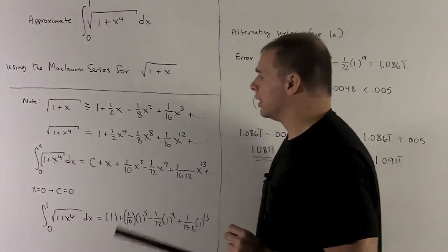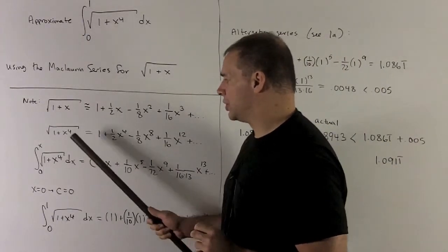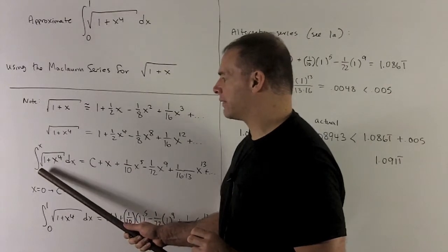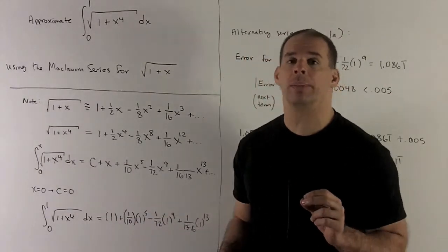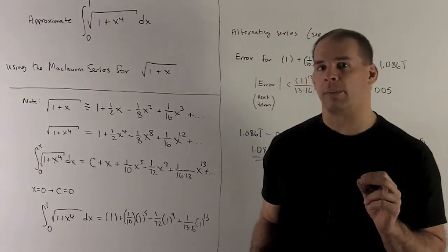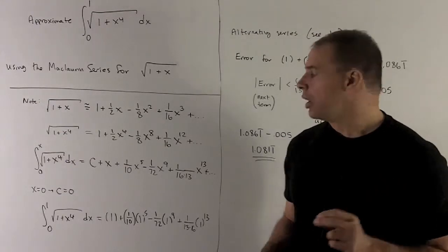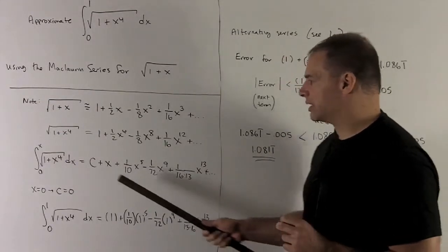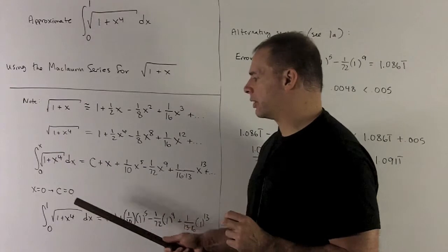So you note, if I put in 0 for x, what we're going to have is a definite integral going from 0 to 0, and that's always going to give me 0 no matter what the function is. On this side, if I put 0 in, we're just going to get c, so that means c is going to be equal to 0.